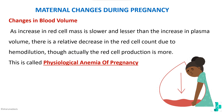An important concept is the physiological anemia of pregnancy. Even though there is an increase in red cell mass, the rate of increase is slower and lesser compared to the increase in plasma volume. This causes a relative decrease in red cell count compared to plasma volume — a hemodilution — and this is called the physiological anemia of pregnancy.